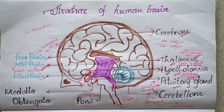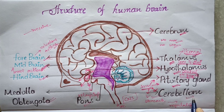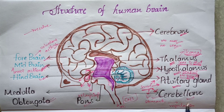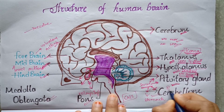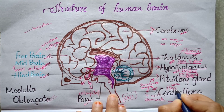The cerebellum maintains the body's balance properly — for example, walking or holding an object in the hand.